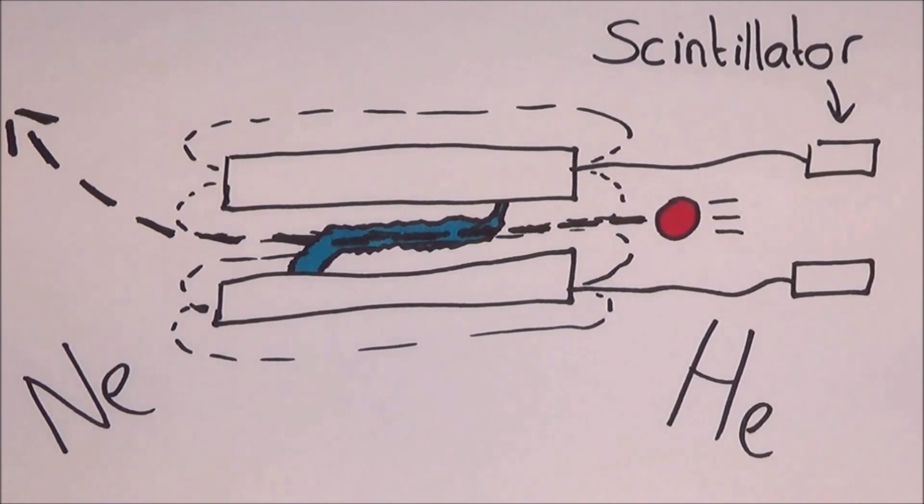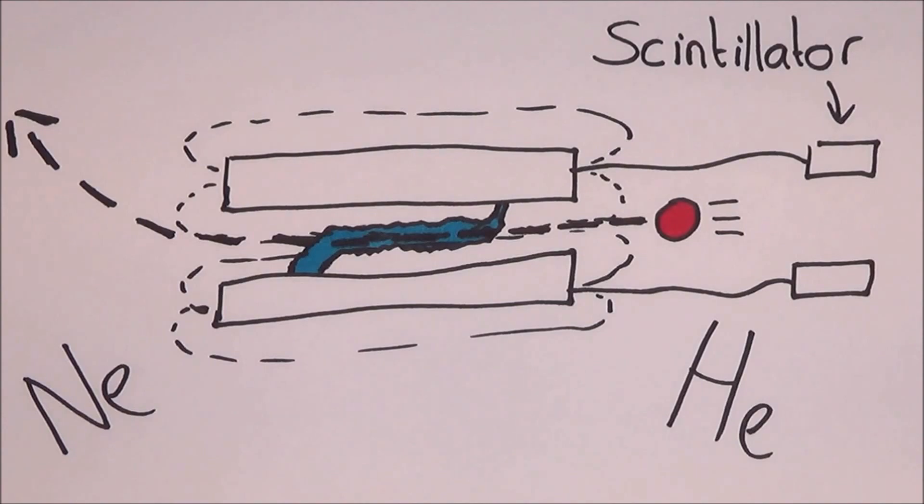Spark machines are less sensitive than bubble chambers, but they can be made highly selective and so they are used to finding rare events.